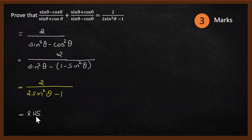We did not have to use too many identities — just one: sin squared theta plus cos squared theta equals 1. The rest was all simplification. This is one of the easier three-mark problems. As long as you remember sin squared theta plus cos squared theta equals 1 and simplify properly, you should easily get three marks. Thanks for watching this video. In future videos, we will look at other mathematics problems. Till then, bye!